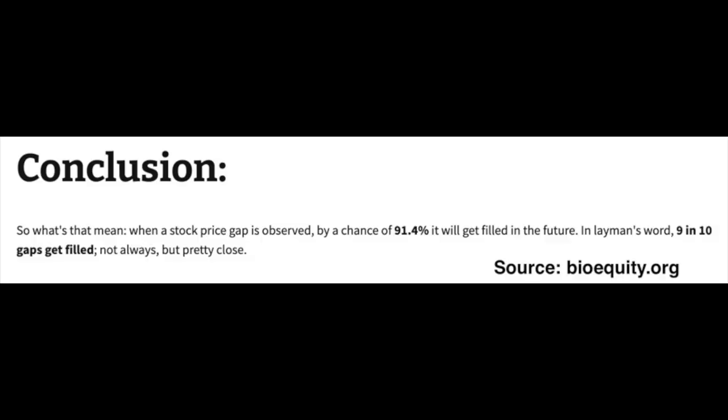So it may be safe to say that in a solid stable mature company, down gaps get filled pretty much 100% of the time — the exception being if the company goes bankrupt. Going back to the up gap study, during 1989 to 2013, when a stock gapped up there was a 91.4% chance that the up gap would get filled. In other words, your odds were a little better than nine in ten.